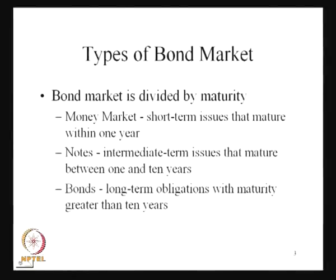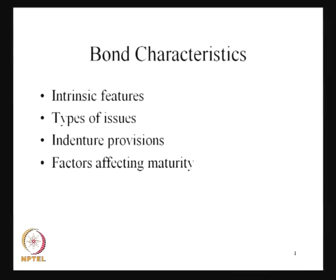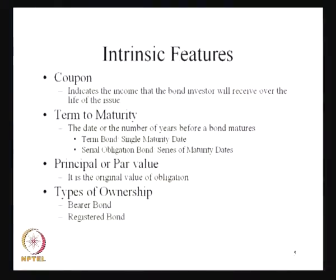This is the overall view of a particular bond. But whenever in general we talk about the bond market or the actual characteristics of a bond, the characteristics are defined in four ways: one is your intrinsic features of the bond, then the types of issues, then you have the indenture provisions, and finally the factors affecting the maturity or the term to maturity of the bond. These are the different ways through which the bond characteristics are defined, and this is how one bond is different from another bond.